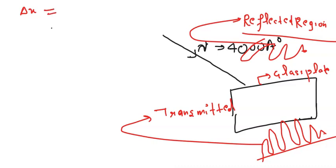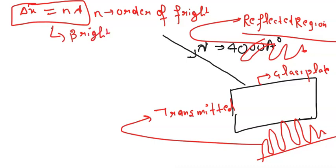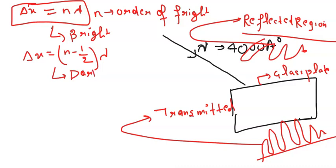The concept we will use: delta x is equal to n lambda, where n is the order of fringes — first order, second order, third order. In the transmitted region, delta x = n lambda for bright fringes, and for dark fringes in the transmitted region, delta x = (n − 1/2) lambda.